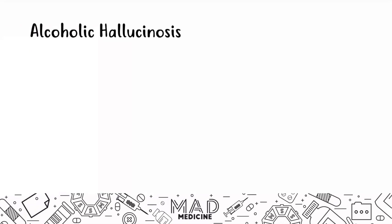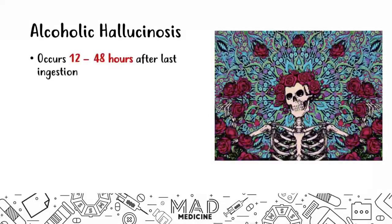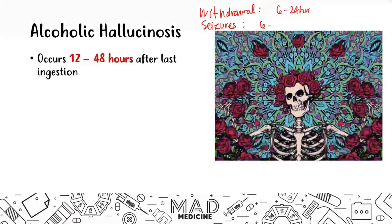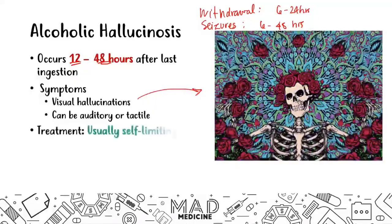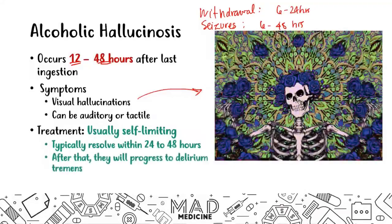Alcoholic hallucinosis occurs around 12 to 48 hours after the last ingestion. Symptoms are usually visual hallucinations, but can also be auditory and tactile. Treatment is usually self-limiting as hallucinations resolve within a day or two on their own. However, if they don't resolve, they will likely progress to delirium tremens.